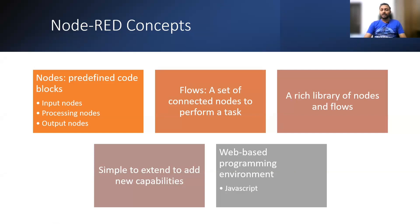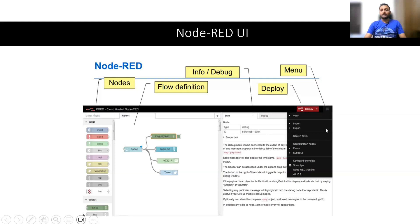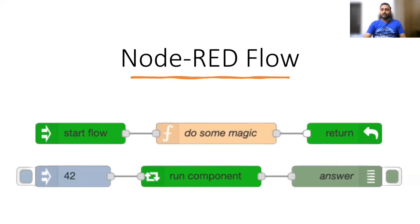There is a web-based environment where JavaScript-based code can be written if there is no built-in node. In the Node-RED user interface — which is a browser-based drag-and-drop solution — on the left side you have all the nodes: input, output, and processing nodes. Input nodes include inject, catch, status, and more. In the middle, you have the flow definition and wiring. On the right, you see node information and how to use each node, plus debug output. You can deploy using the deploy button, and there are additional options in the hamburger menu.